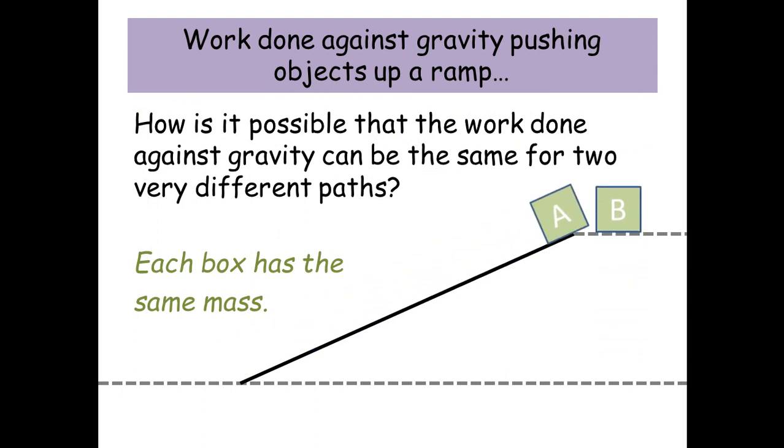How is it possible that the work done against gravity can be the same for these two very different paths? Each box has got the same mass. However, box A you slide up the ramp and box B you just basically lift directly up to where you need it to be.